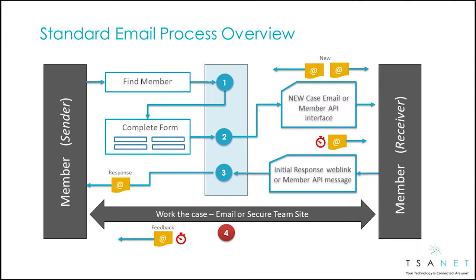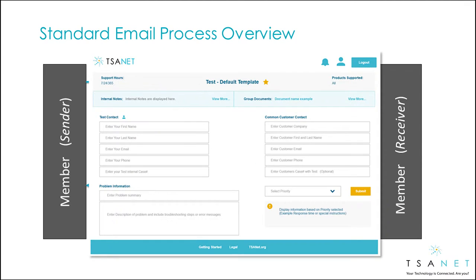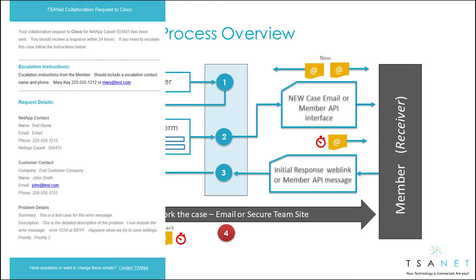Let's take a look at the end-to-end process to better understand how TSAnet Connect works. First, the sender logs into TSAnet Connect and finds a partner. They fill out their process form, select a priority, and hit Submit. Then the email process completes the connection — the sender gets an email that includes SLA and escalation instructions to use if needed.